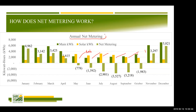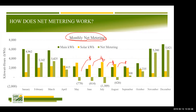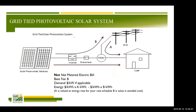I call this annual net metering when they let you roll over kilowatt-hours, and monthly net metering when they convert it to dollars each month. You have to read through carefully to figure out how yours works.